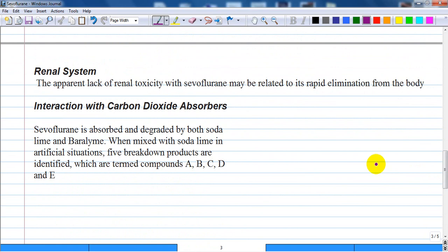The renal system: the peak concentration of inorganic fluoride after sevoflurane is similar to that after using enflurane anesthesia and there is possible correlation between duration of exposure and peak concentration of fluoride ions. But renal blood flow is well preserved.